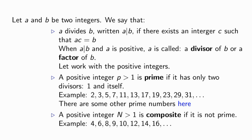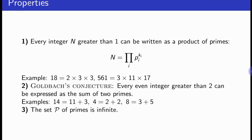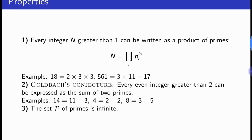When a number is not prime it is said to be composite. The first property on this slide: every integer n greater than 1 can be written as a product of primes. For example, 18 equals 2 times 3 times 3, and 561 equals 3 times 11 times 17. Then you can see Goldbach's conjecture: every even integer greater than 2 can be expressed as the sum of two primes — for example, 14 equals 11 plus 3.